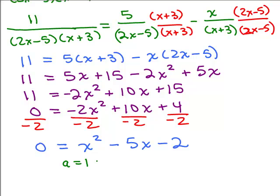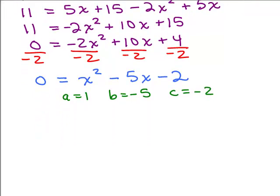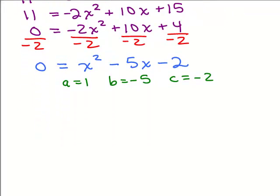A is 1, B is negative 5, C is negative 2. By the way, if you wouldn't have divided by negative 2, you would have A is negative 2, B is 10, and C is 4, and you can verify that if you use those for your values of A, B, and C, when you're all done, in the end, you're going to get the same answer that I get when I use these values of A, B, and C. It's just that I'm going to have easier arithmetic.